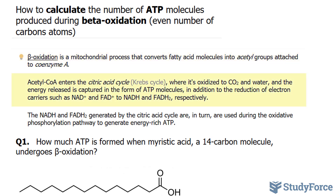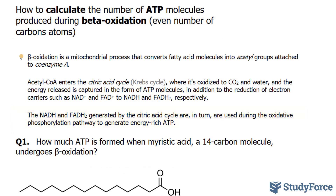Acetyl CoA then enters the citric acid cycle, also known as the Krebs cycle, where it's oxidized to carbon dioxide and water, and the energy released is captured in the form of ATP molecules, in addition to the reduction of electron carriers such as NAD+ and FAD, that are reduced into NADH and FADH2 respectively. The NADH and FADH2 generated by the citric acid cycle are in turn used during the oxidative phosphorylation pathway to generate even more energy-rich ATP molecules.